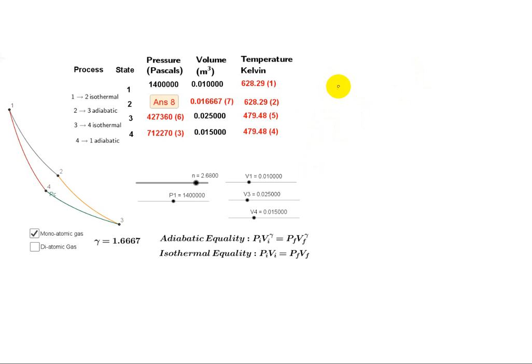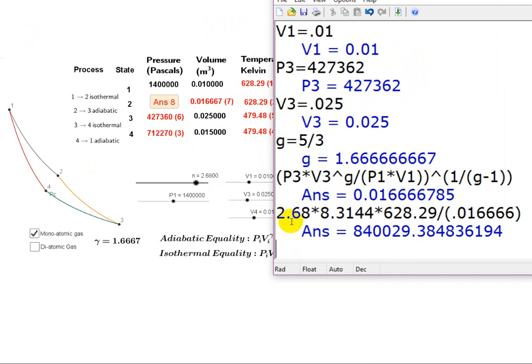So the last piece is just another gas law problem. We have to find the pressure at 2. The pressure at 2 is going to be nR temperature at 2 over the volume at 2. Once again, I'm just going to grab a calculator and show it to you. It's 2.68 moles times R times the temperature at 2 over the volume at 2. It's going to give me 840000 pascals.